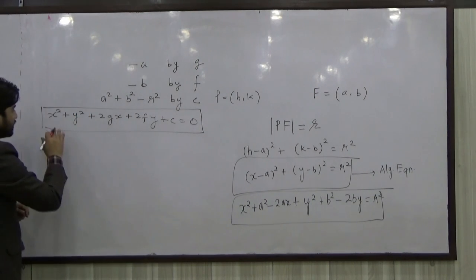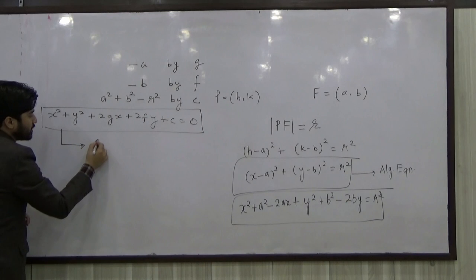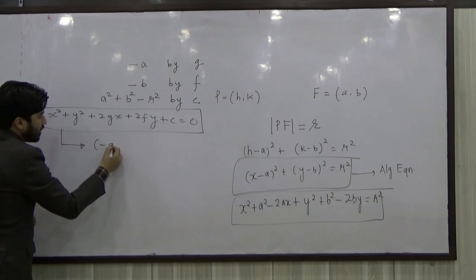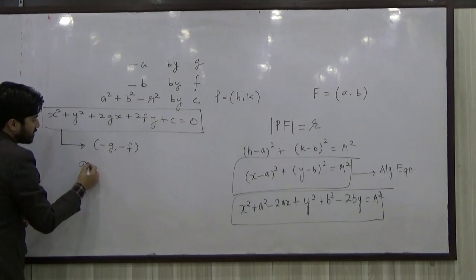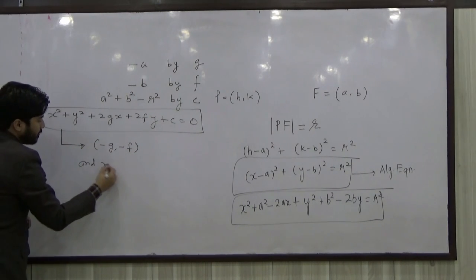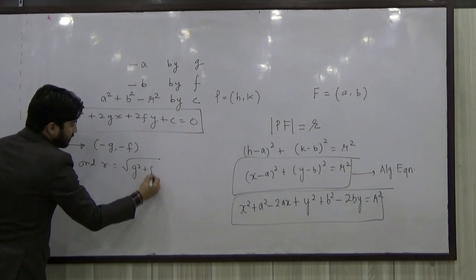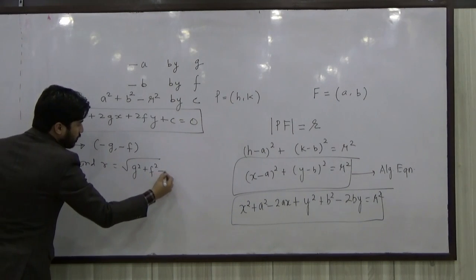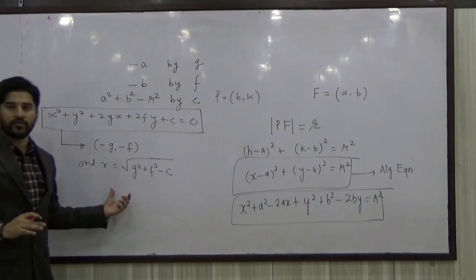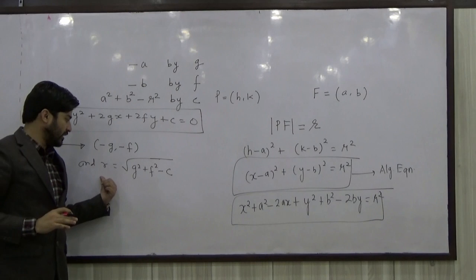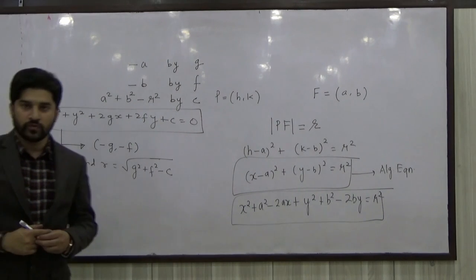This general form represents a circle with center (−G, −F) and radius equal to √(G² + F² − C). You must be wondering how we can say that the radius is √(G² + F² − C). So we will just do a quick factorization to verify this.